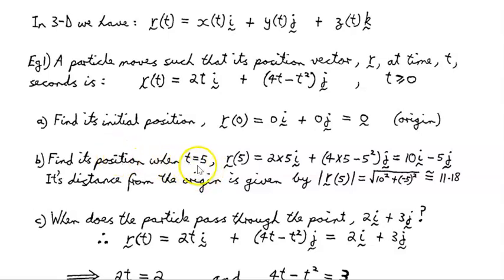Now, let's find its position when t = 5. Well, at t = 5 we substitute 5 in. r(5) is, up here, 2 times 5, 2 times 5. Up here, 4 times 5 minus 5 squared. This gives us 10i in the i direction, 10 units in the i direction, and minus 5 units in the j direction. So we're in the negative j direction.